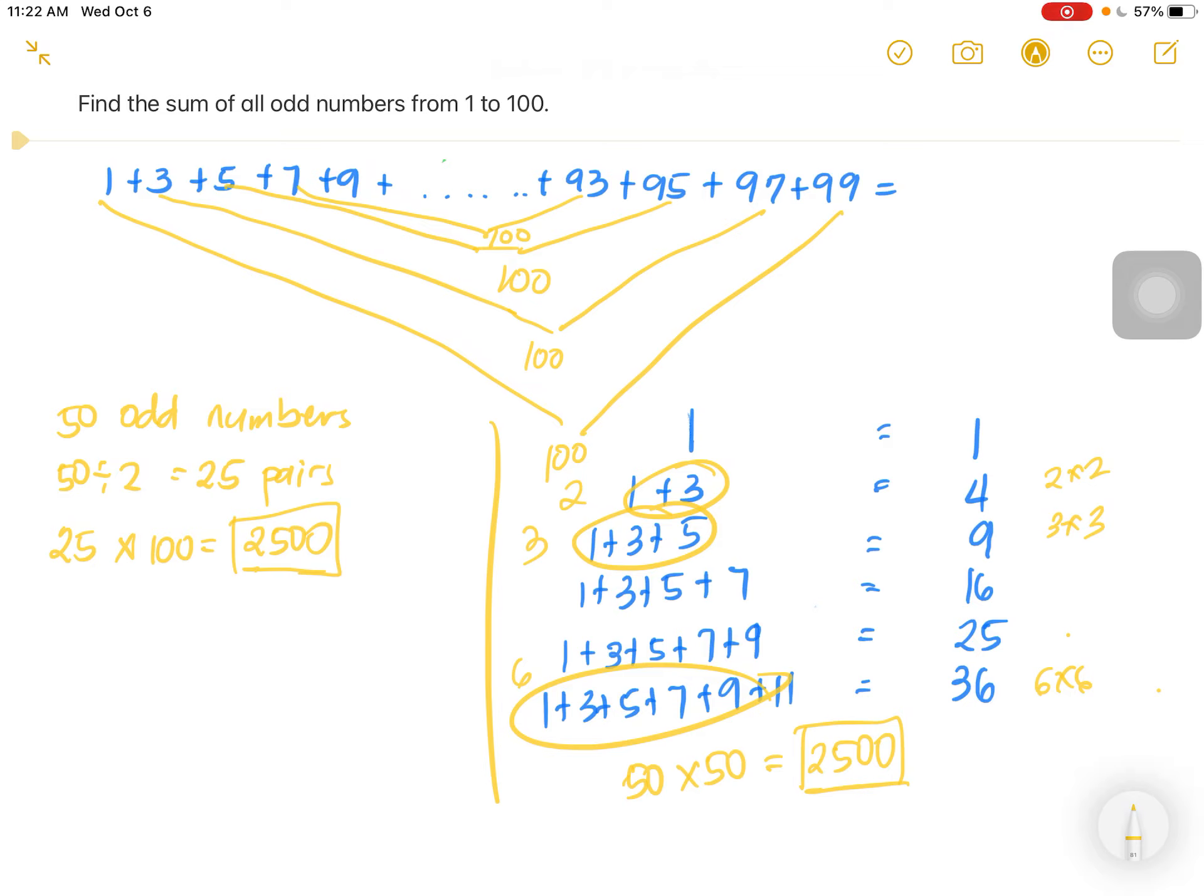And the last one will be counting the number of odd numbers that you will add, multiply it by itself, and you'll get the same answer. That's it.